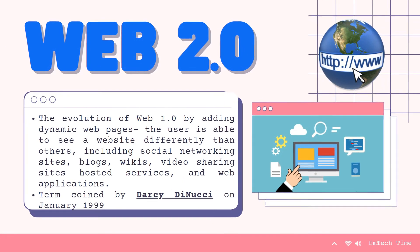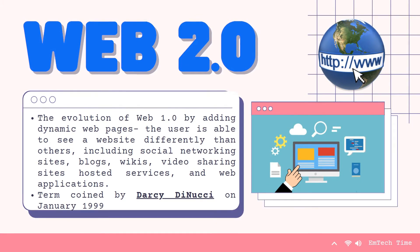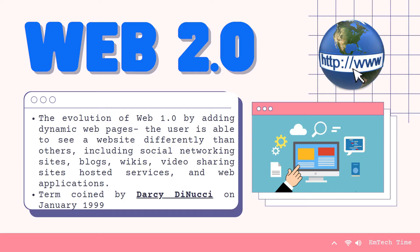The second is Web 2.0, also known as dynamic web pages. Web 2.0 is a term coined by Darcy DiNucci in January 1999 in her article titled "Fragmented Future." Web 2.0 is the evolution of Web 1.0 by adding dynamic pages. The user is able to see a website differently than others. It includes social networking sites, blogs, wikis, video sharing sites, hosted services, and web applications. Web 2.0 allows users to interact with the page instead of just reading it. Users may comment or create a user account, and browsers can now be used for user interface, application software, and even file storage.